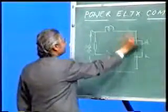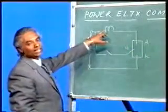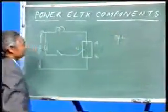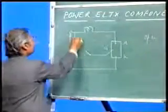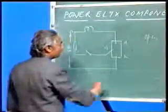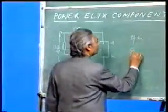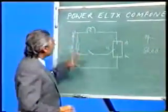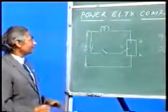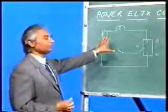When you connect between anode and cathode and close the switch — meaning the gate is also connected — the device should conduct and the bulb should glow, showing the device is healthy. If the device does not conduct with the gate connected, the bulb will not glow — it means the device is open. If the bulb glows even before the switch is closed, the device is short. The same circuit can also be used to test a triac.